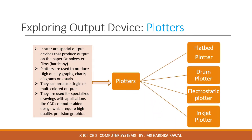Now let us discuss plotters. Printers have a limited page size, so if we want large size printing, the printer is not suitable — thus we have plotters. Plotters are special output devices that produce output on paper or polyester films. They are used to produce high quality graphs, charts, diagrams, or visuals, and can produce single or multi-colored outputs. They are used for specialized drawings with applications like CAD (Computer-Aided Design) which require high quality precision graphics. Plotters can be classified into: flat bed plotter, drum plotter, electrostatic plotter, and inkjet plotter.